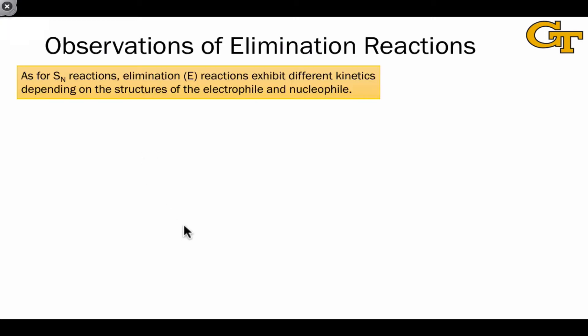The empirical evidence for this mechanistic dichotomy in elimination reactions has to do with the different kinetics of the two reactions, depending on the structures of the electrophile and nucleophile.